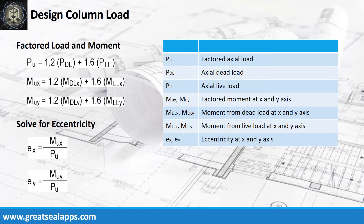Get the factored axial load from axial dead load and axial live load. Get the factored moment from moment dead load and moment live load for both x- and y-axis. Then solve for the corresponding eccentricities.